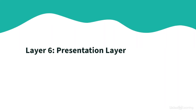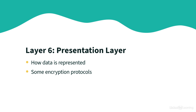Layer six is the presentation layer, and it's all about how we represent data. We might encrypt data for security reasons, so some of our encryption protocols live here at layer six. We might format a picture as a JPEG image — that's a format of how that picture is represented, so we say JPEG formatting lives at layer six.